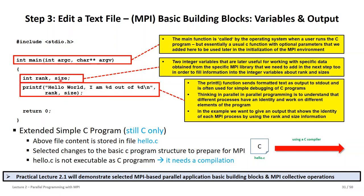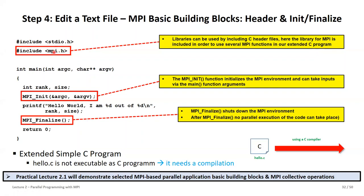To jump from this to a proper MPI program, we have to include the MPI header to get access to the different MPI functions in our extended C program. We have already defined rank and size, but still need to fill them with values. What we do is create an MPI environment with MPI_Init and MPI_Finalize. Every MPI program needs those two — parallelization can only happen between them, because that is where the parallel environment is created.